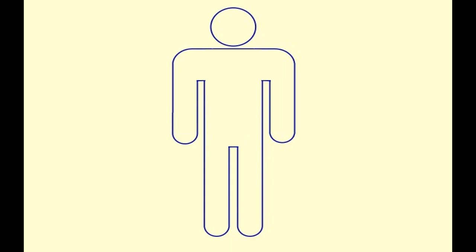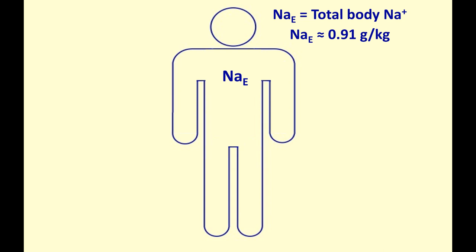We all have a certain amount of sodium in our bodies — a certain mass of sodium. I'm going to represent that as sodium E, total body sodium. The amount of sodium in our bodies is approximately 0.91 grams per kilogram. So for a 70 kilogram man, that will represent about 64 grams of sodium, approximately.